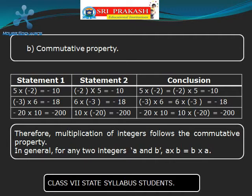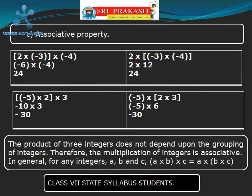In general, for any two integers A and B, A into B is equal to B into A. Now let us check whether the Associative Property for integers under multiplication holds good or not. Let us take three integers: 2, minus 3, and minus 4. First let us take 2 and minus 3 as a group and multiply, then multiply by minus 4. The product we get is 24.